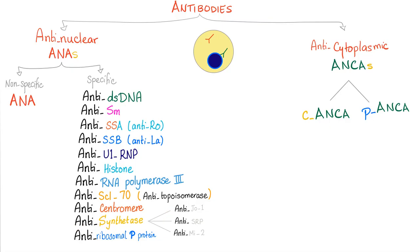Anti-synthetase has three subtypes. Anti-Jo-1 — think of a lady who got divorced: in the beginning she was pro-Joe, but now she's anti-Joe. Then we have anti-SRP and anti-MI2. My goodness — anti-MI2 has a good prognosis; this is dermatomyositis with good prognosis.